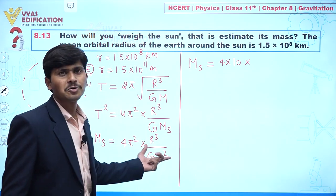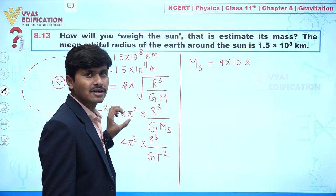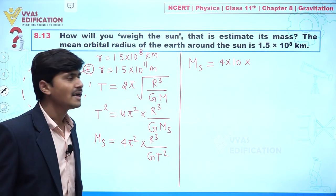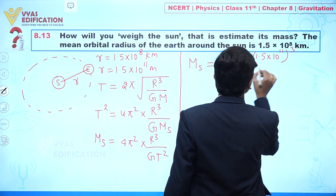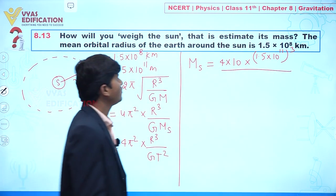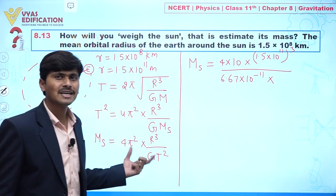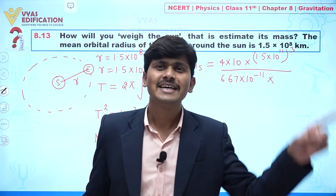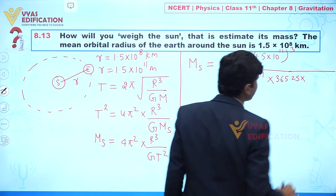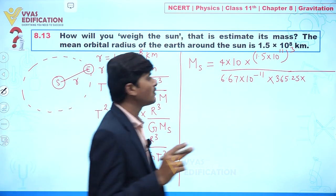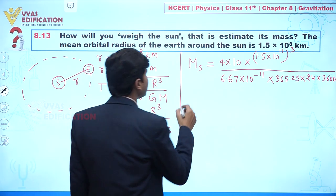Now substituting values: 4π² ≈ 40; r = 1.5 × 10¹¹ m, cubed; G = 6.67 × 10⁻¹¹; and the time period T — Earth revolves around the Sun in 365.25 days, so T = 365.25 × 24 hours × 3600 seconds.